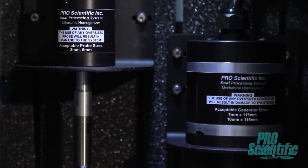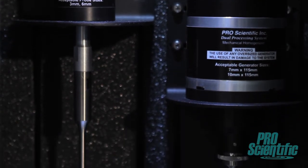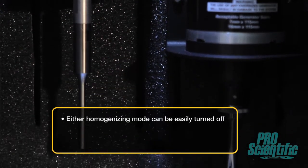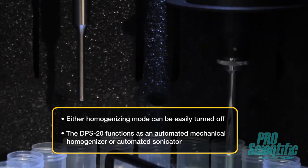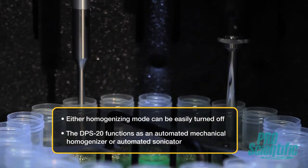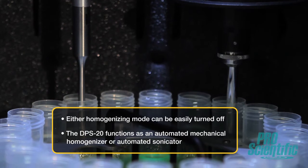However, if your specific sample would not benefit from dual processing, either homogenizing mode can be easily turned off so that DPS20 functions as an automated mechanical homogenizer or an automated sonicator.